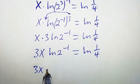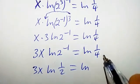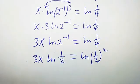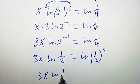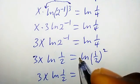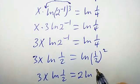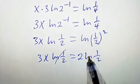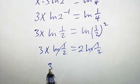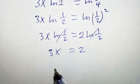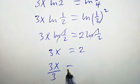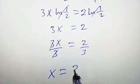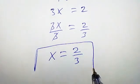So we have 3x times ln 2 to the power of negative 1, which we write as ln 1 over 2, equal to ln 1 over 4, which can also be written as 1 over 2 squared, so that is 2 times ln 1 over 2. We have ln 1 over 2 on both sides, so they cancel each other. So we are left with 3x equal to 2. Dividing both sides by 3, we are going to have 3x over 3 equal to 2 over 3. Clearly, 3 cancels 3, so we have x equal to 2 over 3. This is the second solution.